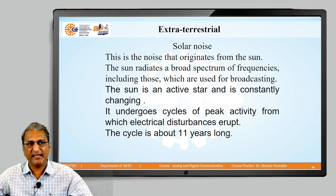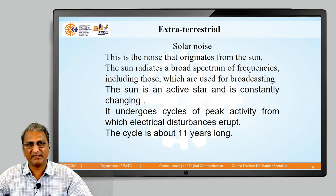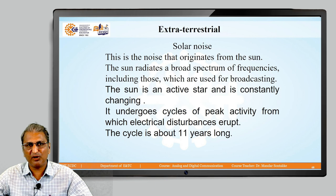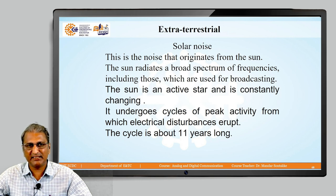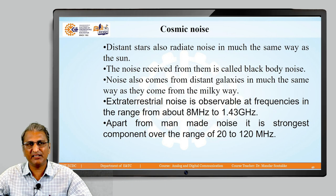The next extraterrestrial type is solar noise. This is the noise that originates from the sun. The sun radiates a broad spectrum of frequencies including those used for broadcasting. The sun is an active star and is constantly changing — it undergoes cycles of peak activity from which electrical disturbances erupt. The cycle is about 11 years long.